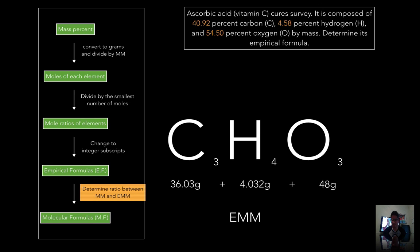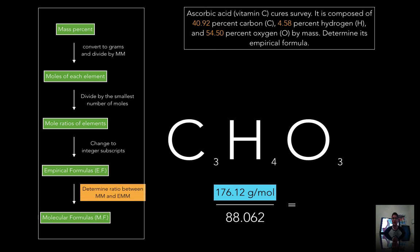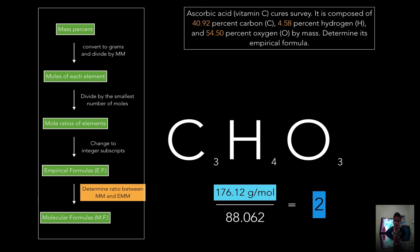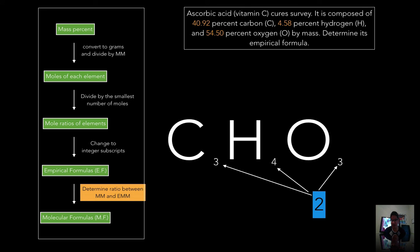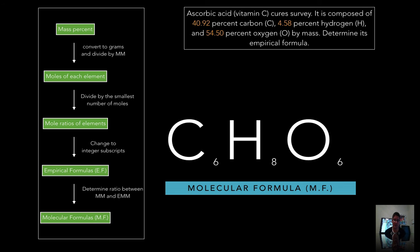The empirical formula molar mass is calculated as: (12.01 × 3) + (1.008 × 4) + (16.00 × 3) = 88.062 g/mol. The ratio of the molecular molar mass to the empirical molar mass is 176.12 ÷ 88.062 ≈ 1.99, essentially 2. This tells us the actual molecular formula is two times the empirical formula. Multiplying each subscript by 2 gives the molecular formula: C₆H₈O₆ — that is what ascorbic acid actually looks like.